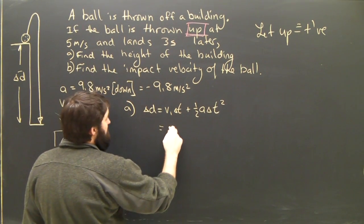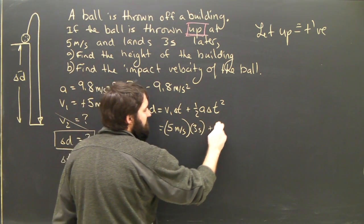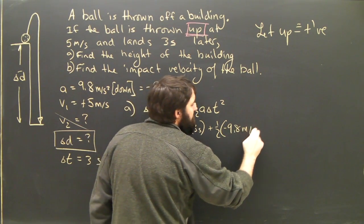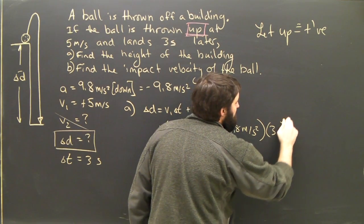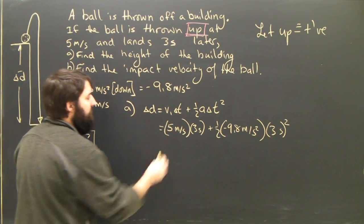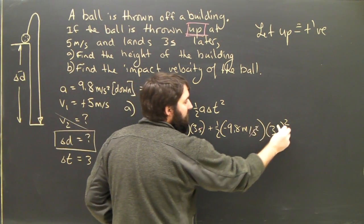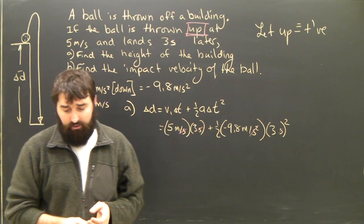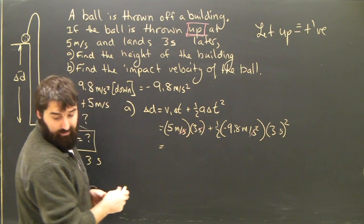I dump in my numbers and my units. That's 5 meters per second times 3 seconds plus 1 half negative 9.8 meters per second squared times 3 seconds squared. I can see the seconds are going to cancel out, giving me meters, which is good. And over here, the seconds squared will cancel out with the seconds squared. So, that works out quite nicely.